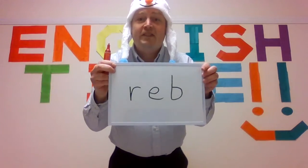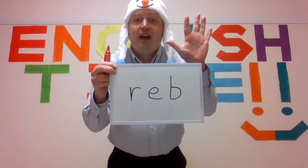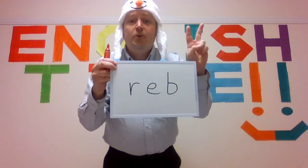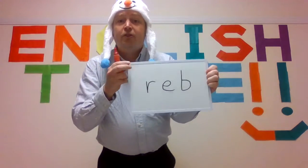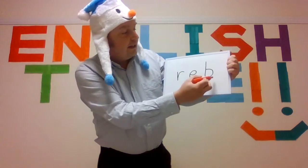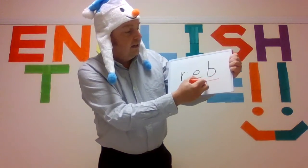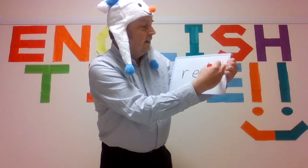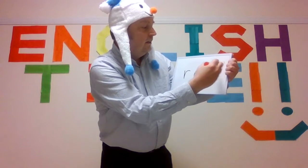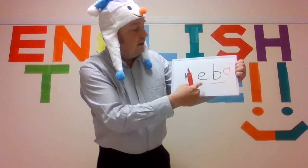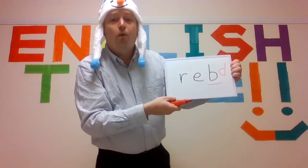So the first one — red. Five seconds: five, four, three, two, one. Did you find the wrong letter? The wrong letter is B. It should be the reverse, so you should have D. Let's spell together: R, E, D — red. Very good.